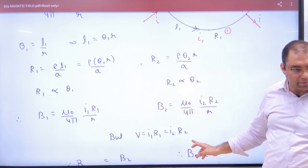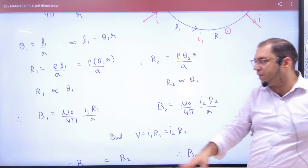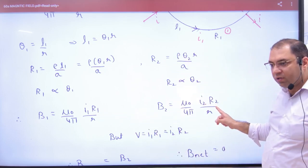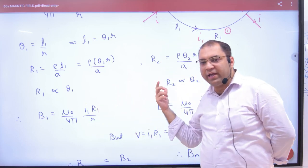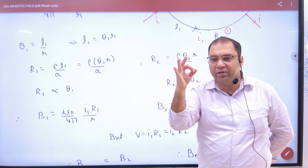So B's formula will become this and this. One inside and one outside. But I have told you that in parallel, I1 R1 is equal to I2 R2. So the numerator is equal. The rest of the term is equal. One is inside and one is outside. So what will be net? Zero.